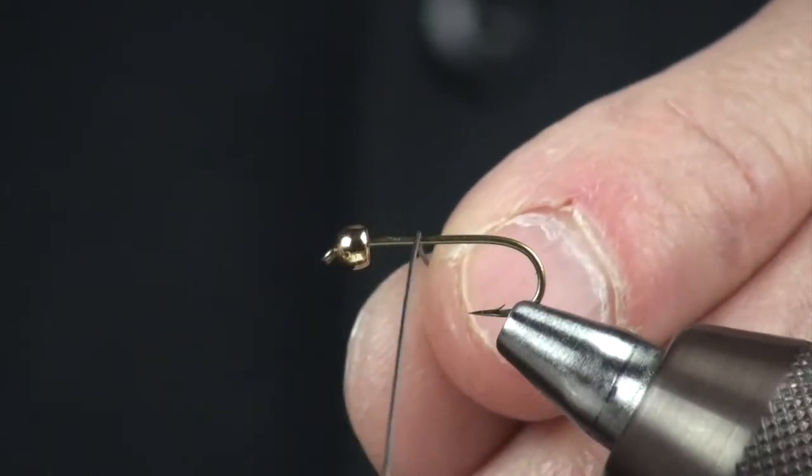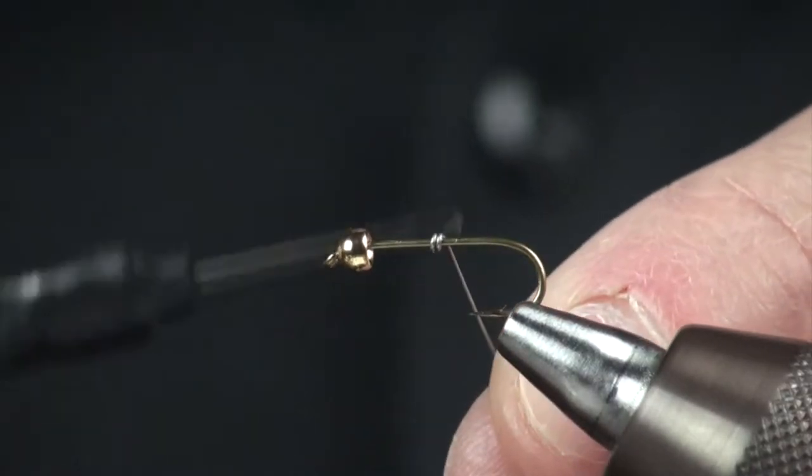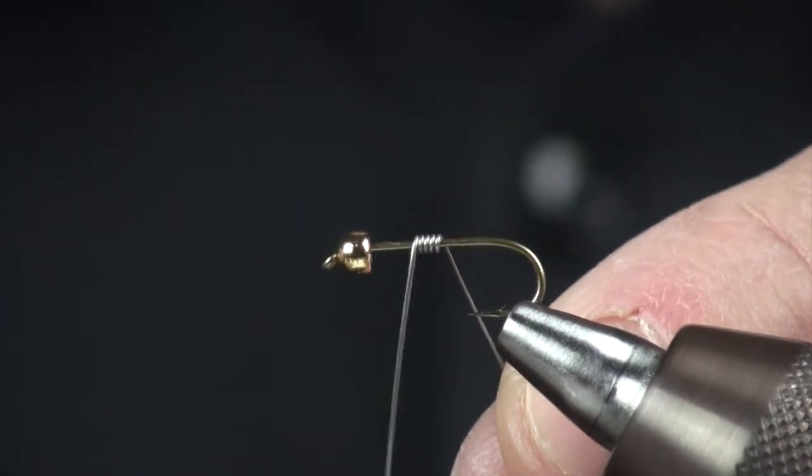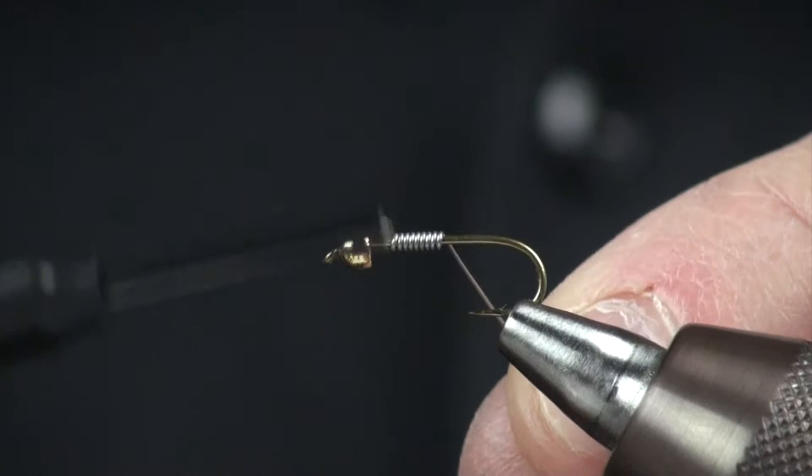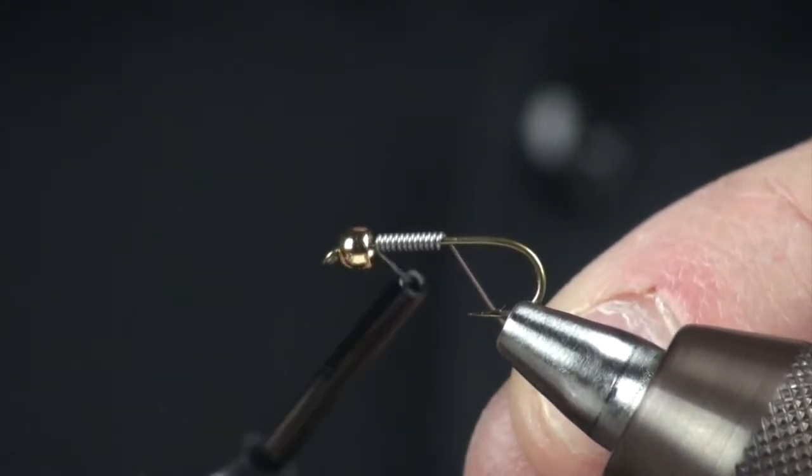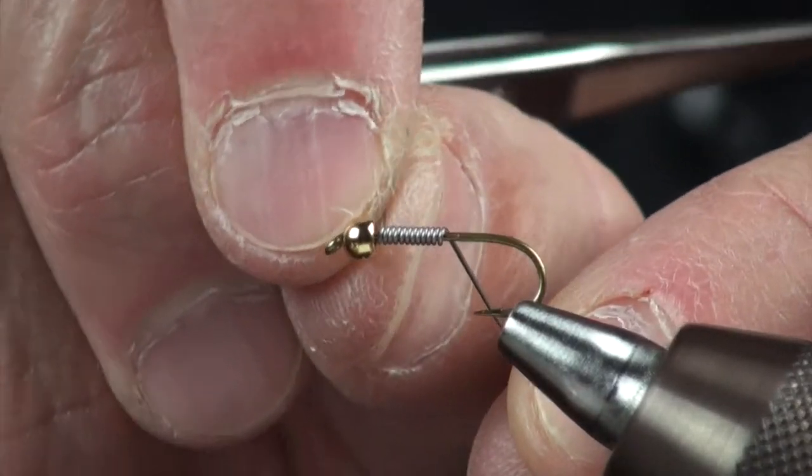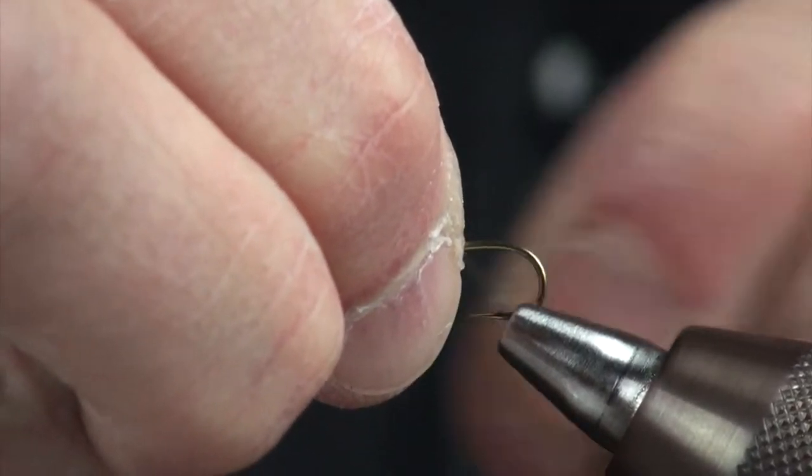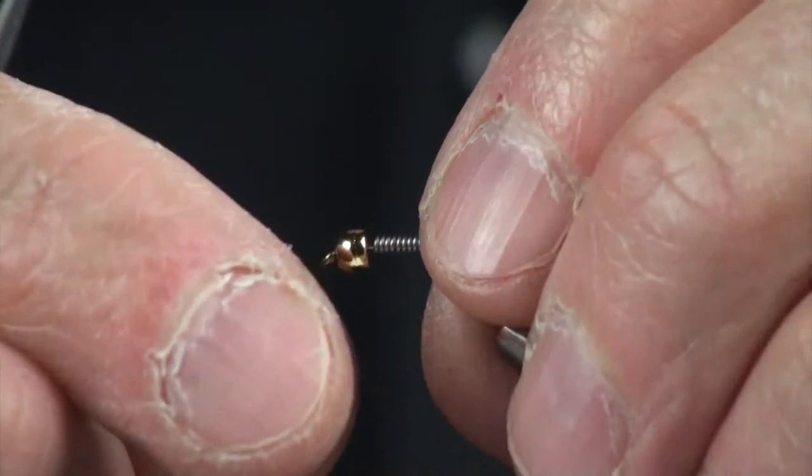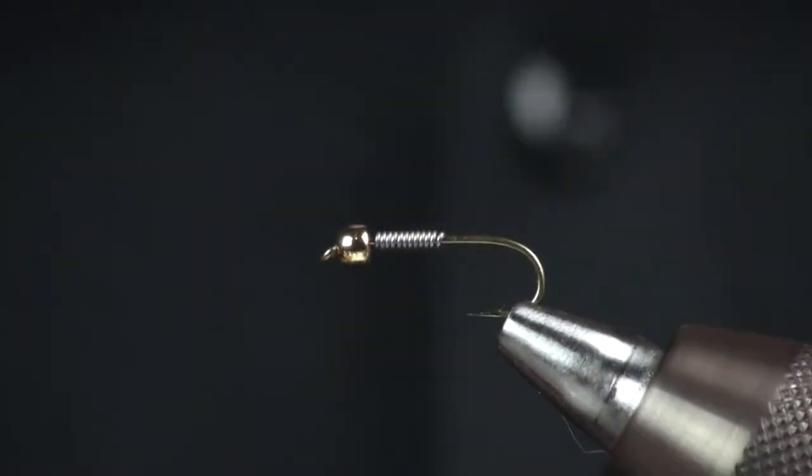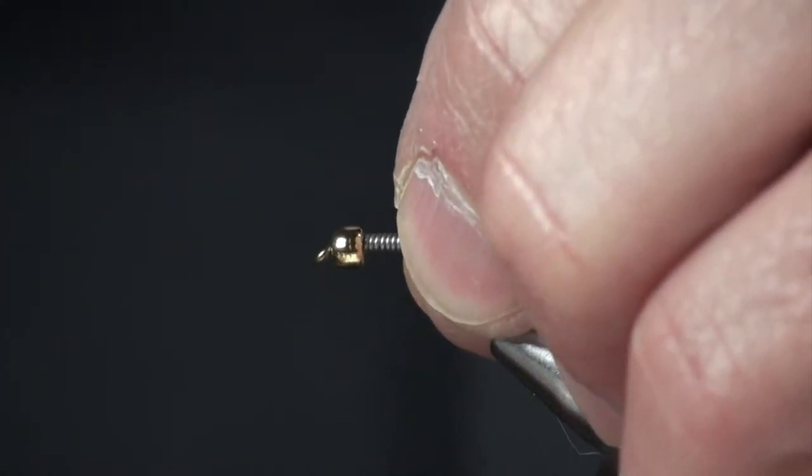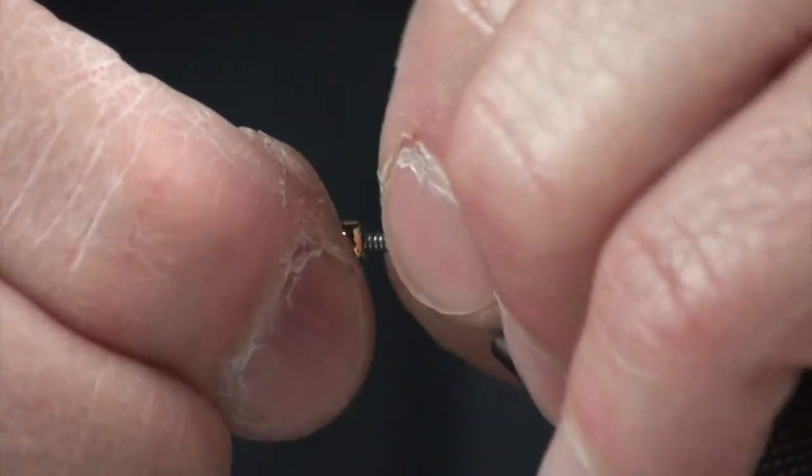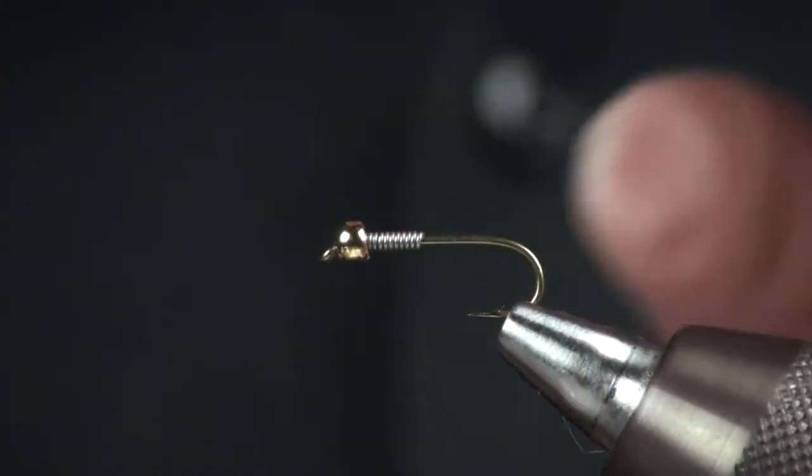The next thing I'm going to do is I'm going to add some lead to this. And for this size fly, it'll take about twelve wraps. And this is such a soft material, I can just pull that and break it. Also, by using some lead behind this bead, what I'll do is center that bead, make it real stable there so it doesn't move around.